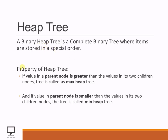When you want to construct a heap tree, there are two different properties of the heap tree. The first property is: if the value in a parent node is greater than the value in its two children nodes, then the tree is called a max heap. So what is a max heap tree? The max heap tree is where every parent node has a value greater than that of its children.